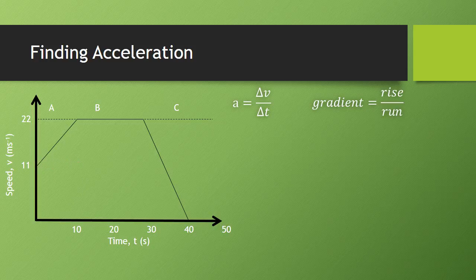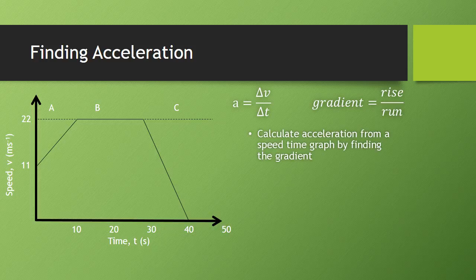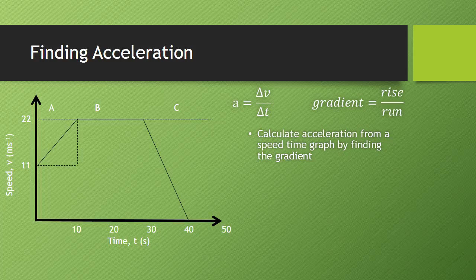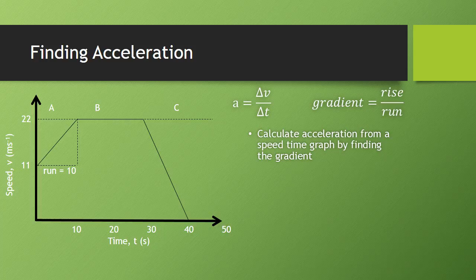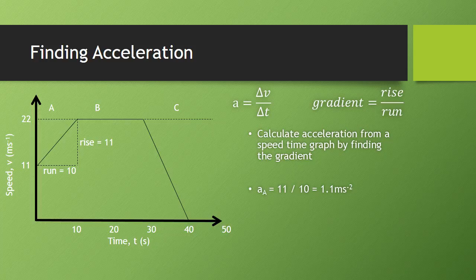Once again, when we calculate the gradient, we are calculating the acceleration of our object. For section A, it had a run of 10 seconds and a rise of 11 meters per second. We plug that into our equation, we get 1.1 meters per second per second for section A.